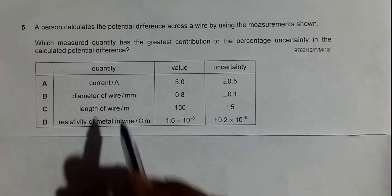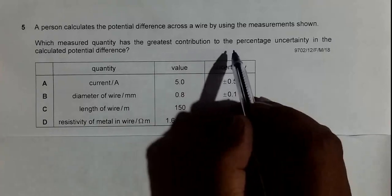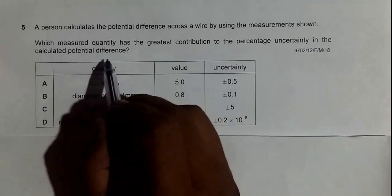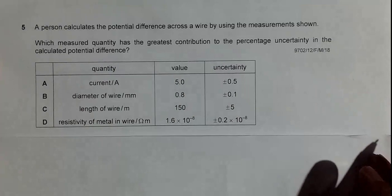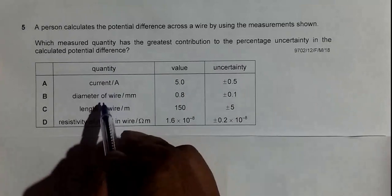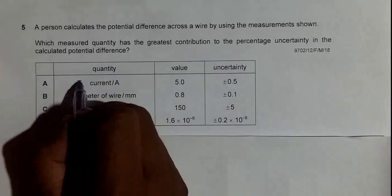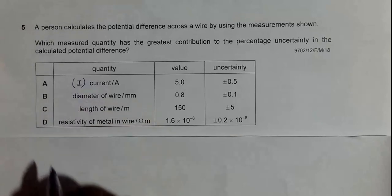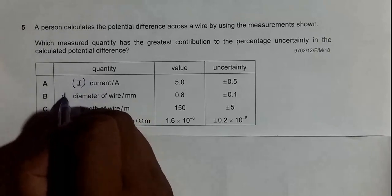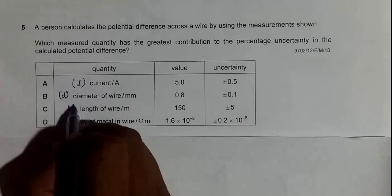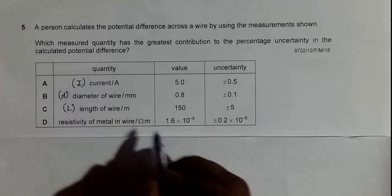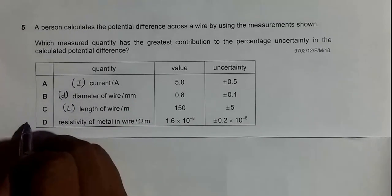So we have different quantities here. Current is equal to I, diameter of the wire is written as D, we have length of the wire L, and we have resistivity of the wire which we can write as ρ (rho).